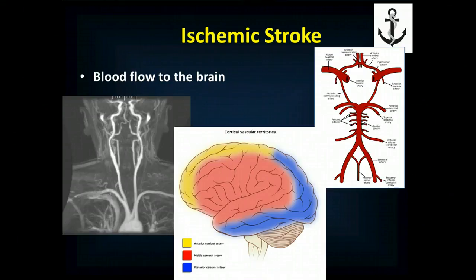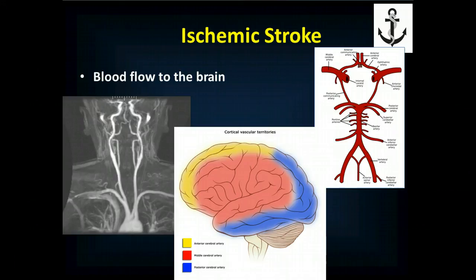Looking at the blood flow in the brain — on the left is an angiogram showing the carotid arteries delivering blood to the brain. On the right is the circle of Willis, which theoretically allows you to cut off blood flow from one carotid and still get blood flow to most of the brain. In reality, too many cheeseburgers make the circle of Willis less effective. If blood flow is cut off beyond the circle of Willis — which is what typically happens — there is no backup flow. The anterior cerebral artery, middle cerebral artery, and posterior cerebral artery all come off the circle of Willis and supply different parts of the brain.